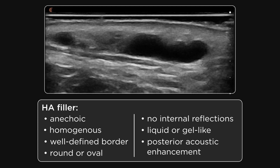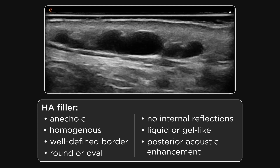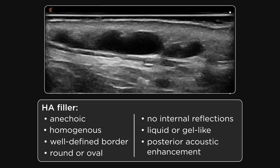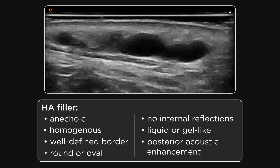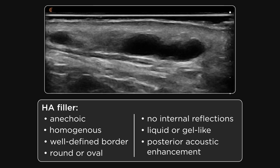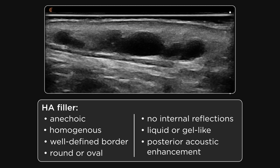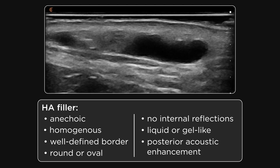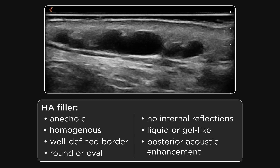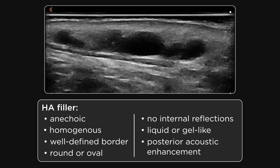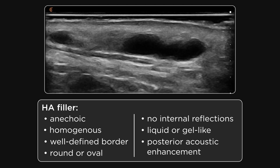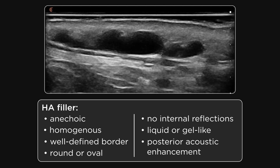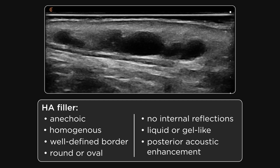There is a strong posterior acoustic enhancement due to the liquid contents, and this amplifies sound waves passing through the filler to the tissues underneath, making them appear whiter. That's the white shadow under the filler there. So this is the classic presentation of HA in tissues. Hyaluronic acid filler is undoubtedly the most commonly used type of filler due to its safety and efficacy, accounting for over 80% of filler used worldwide. It's what you will see in your patient's faces most of the time.